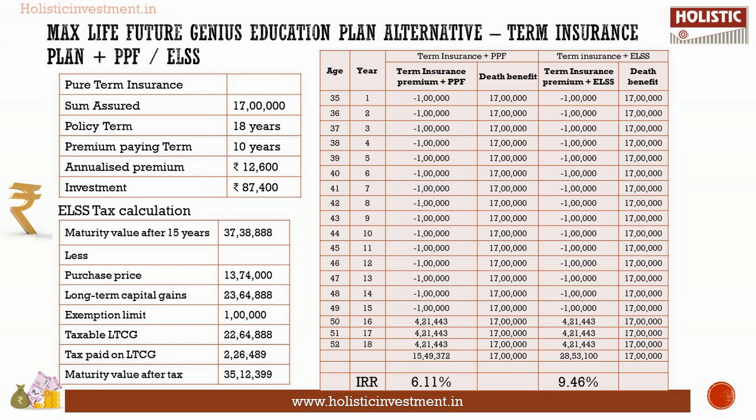The amount accumulated under these scenarios is invested at a seven percent return, to withdraw annually to match the payout in the last four years of Max Life Future Genius Education Plan. Under the PPF account, the final maturity value is rupees 24.48 lakhs. This amount is invested in a seven percent return instrument; after withdrawing rupees 4.21 lakhs similar to the above illustration for the first three years, the final value of rupees 15.49 lakhs is taken out fully in the fourth year.